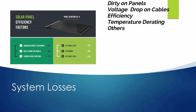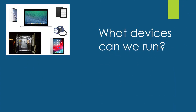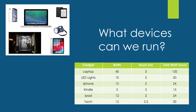Now we know how much we can realistically generate and use in one day. I've taken some of my own devices, plugged them into the watt meter, and recorded the readings. We can see that I could use my laptop, which uses 40 watts for 3 hours, giving a total of 120 watt hours. I can also run some LED lights for a few hours, charge my iPhone, Kindle, iPad, and some other devices. If we total all of these, it comes to 263 watt hours. So we can use quite a lot of devices for quite a few hours during the day with one Cooley 120 watt 12 volt solar panel. You wouldn't necessarily use all of these devices on the same day, so there's quite a bit of diversity there.